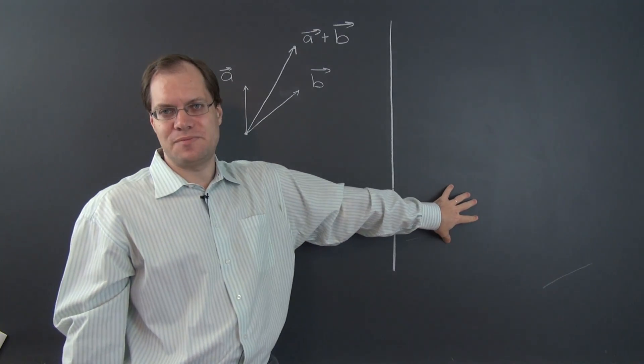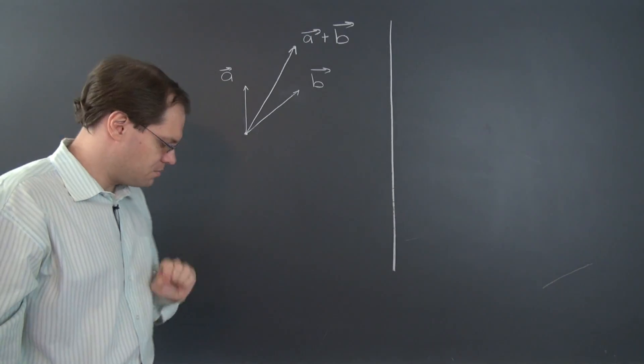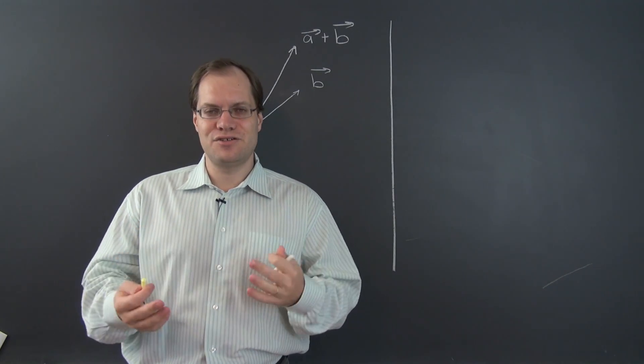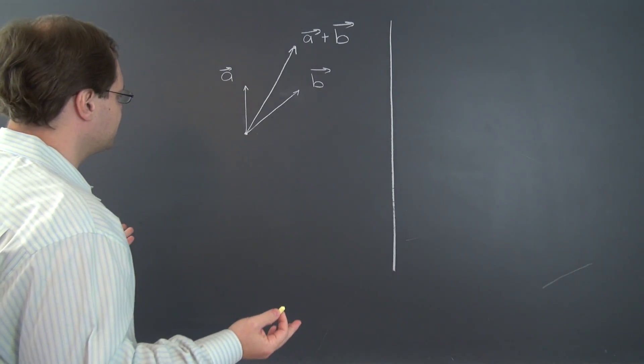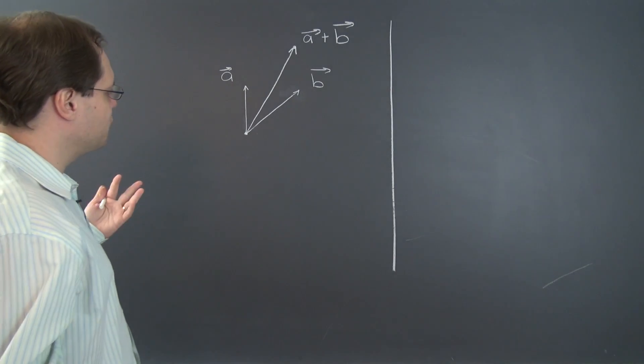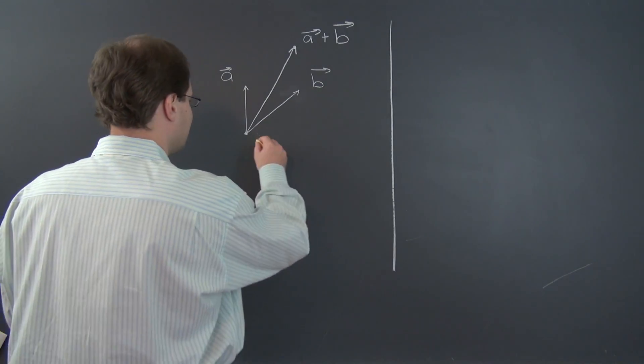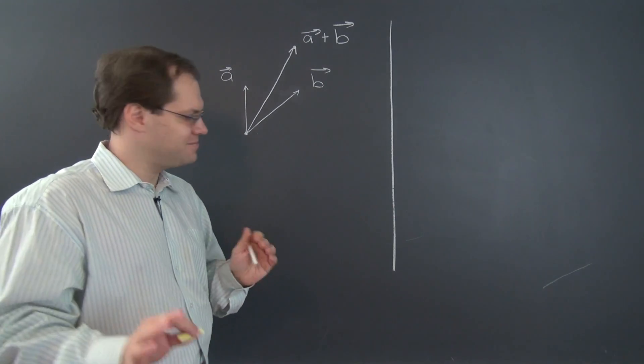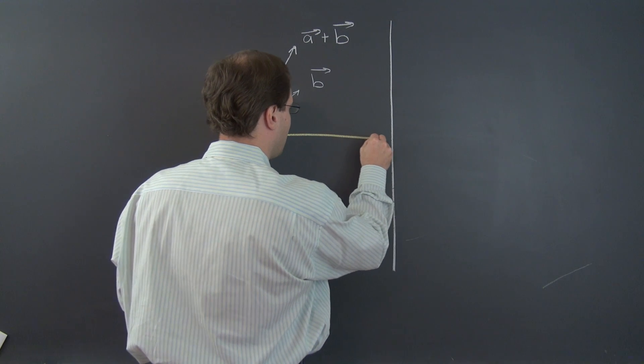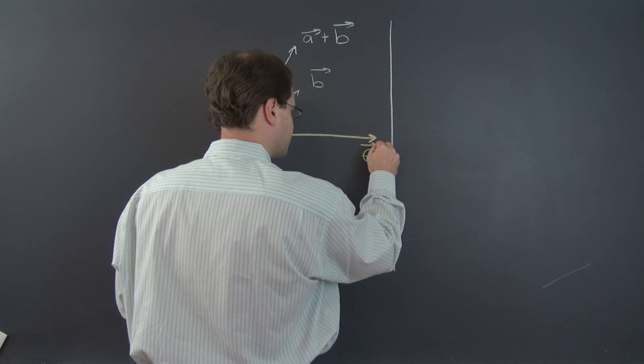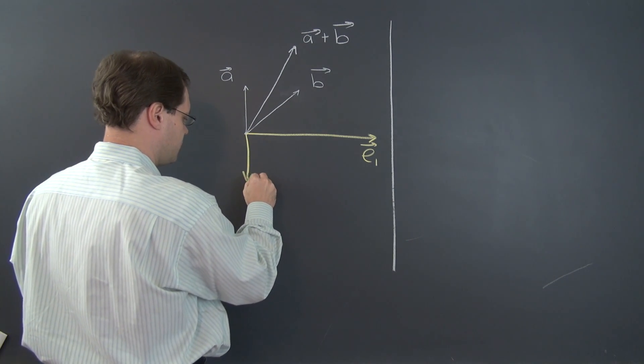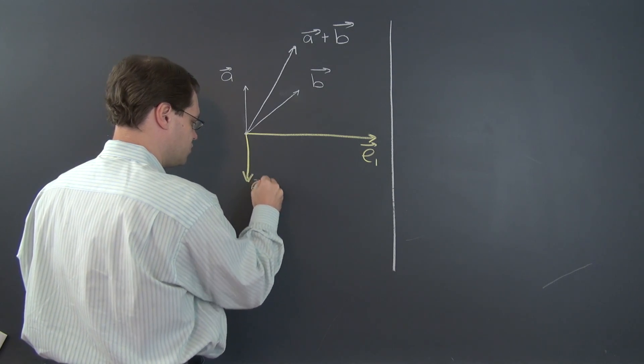All right. Now it's time for components basis. And it always starts by introducing a basis. I'll use a yellow chalk for everything that has to do with this basis. So let me choose a basis. We'll call its elements E1 and E2. We're free to choose it. So I'll just try to be a little bit creative. I'll make sure it's not Cartesian. So here's our basis. This will be E1 and this will be E2.